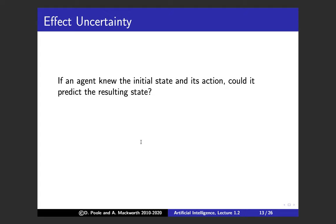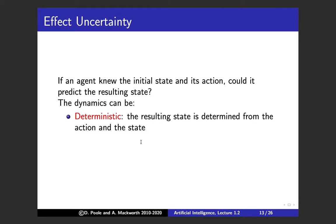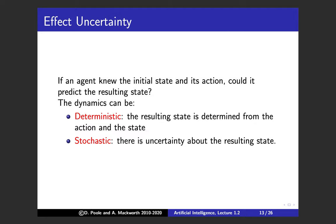The other uncertainty dimension is effect uncertainty: if an agent knew its current state and action, could it predict the resulting state? If yes, the dynamics are deterministic — the resulting state is fully determined by the action and state. If not, the dynamics are stochastic — even knowing your state and action, you can't fully predict the outcome. We'll do planning first under the deterministic assumption, then introduce probability distributions over action effects for stochastic domains.